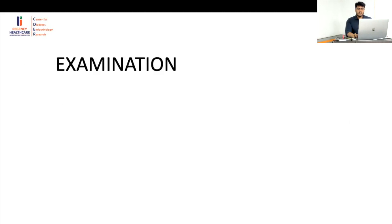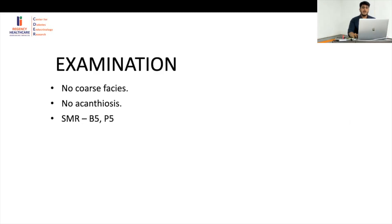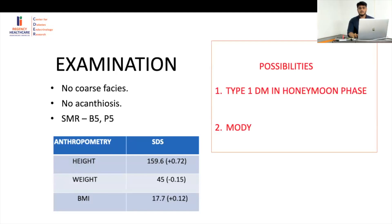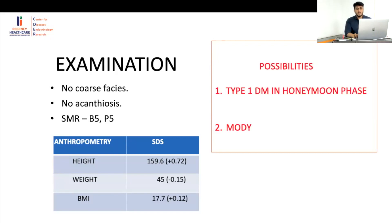Birth history was normal — full term, normal newborn, no postnatal admission, no insulin requirement in the neonatal period. On examination she had no syndromic features, no acanthosis suggestive of insulin resistance, and was in the pubertal period. Anthropometry was neither lean nor obese, not fitting type 1 or type 2. All considerations pointed to an alternative type of diabetes — MODY being a strong possibility given the fluctuating insulin requirement with periods of hyper and hypoglycemia.